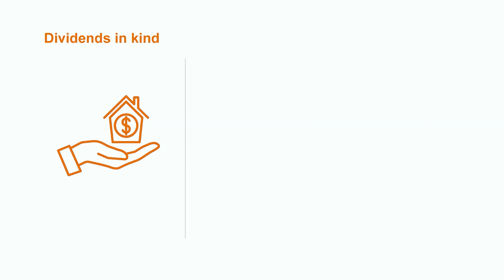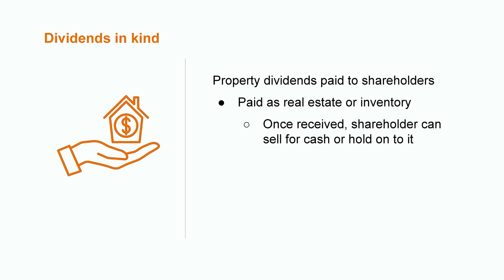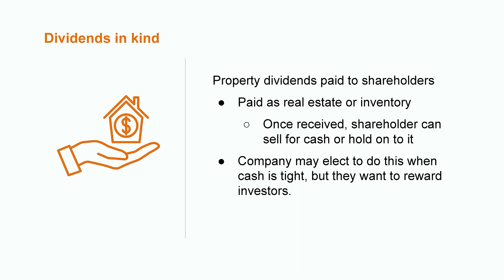While not as common, companies also reward their investors with other types of dividends, including property dividends. Property dividends, also known as dividends in kind, are exactly as they sound. Instead of the company distributing cash to their investors, they provide them with another type of asset, such as real estate or inventory. Once the shareholder receives the physical asset, they can choose to sell it and convert it to cash, or hold on to it for a long-term investment. A common situation for issuing a non-cash dividend is that the company doesn't currently have the funds available to pay out cash dividends, but they still want to compensate their shareholders. This can be an excellent option for all parties involved.